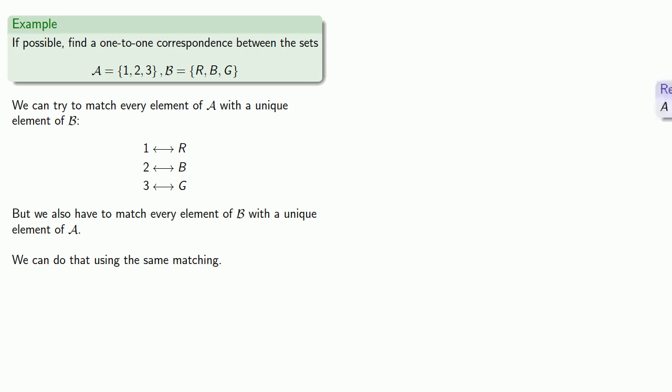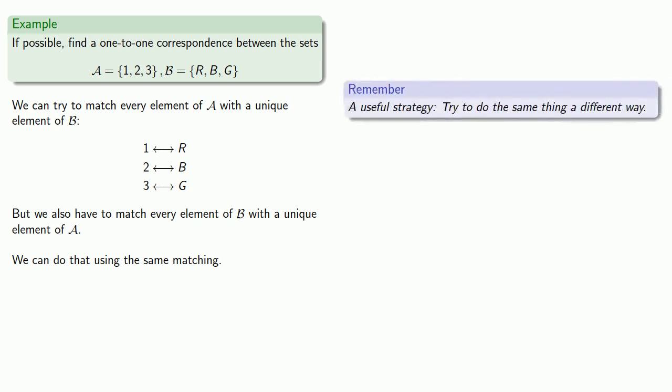A useful strategy: try to do the same thing a different way. Let's find another one-to-one correspondence. We'll take the elements of set A and match them to elements of set B, but not in the order R, B, G — maybe in the order G, R, B. That matches A to B, and we can match B to A by going backwards.